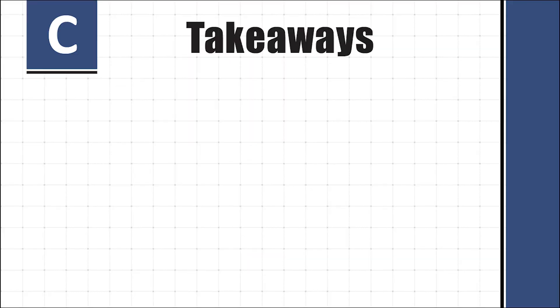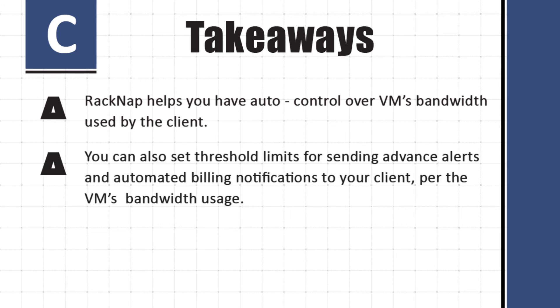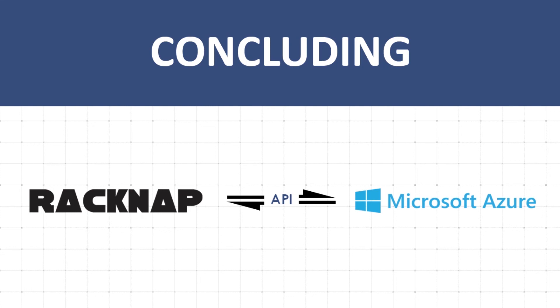The key takeaways from this section are: 1. Ragnap helps you have auto control over virtual machine bandwidth used by the client. 2. You can set threshold limits for sending advance alerts and automated billing notifications to your client. 3. Ragnap auto-calculates the extra bandwidth used, determines the amount payable, sends alerts and reminders to your client, and auto-bills him.